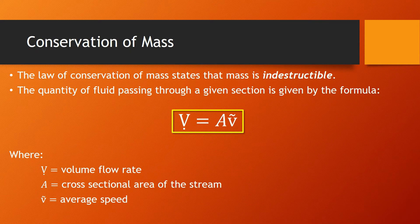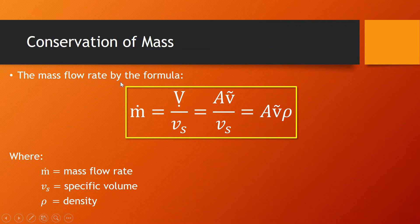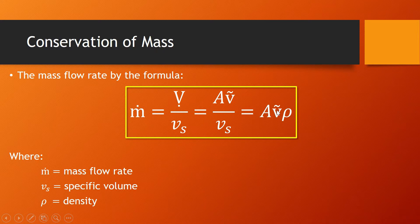The law of conservation of mass states that mass is indestructible. The quantity of fluid passing through a given section is given by the volume flow rate V̇ = A × V, where A is the cross-sectional area of the stream and V is the average speed. The mass flow rate Ṁ = V̇ divided by specific volume. Since V̇ = A × V and specific volume is the reciprocal of density, mass flow rate can also be written as Ṁ = A × V × ρ.